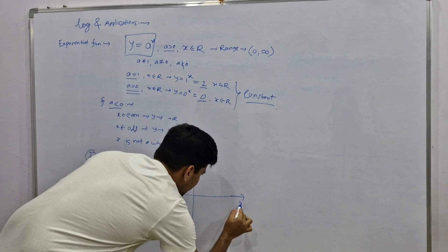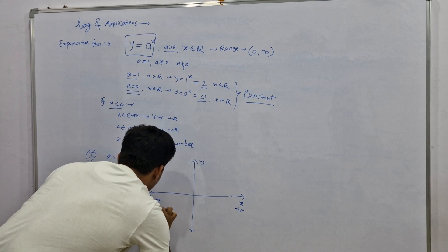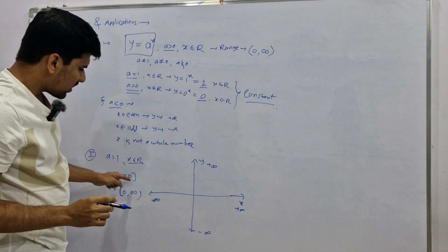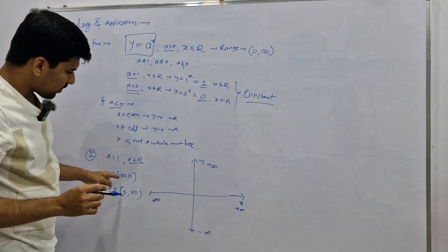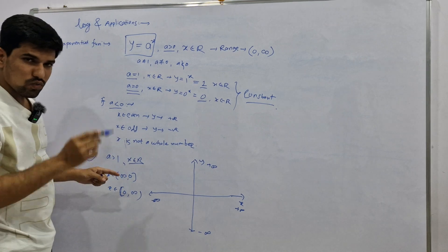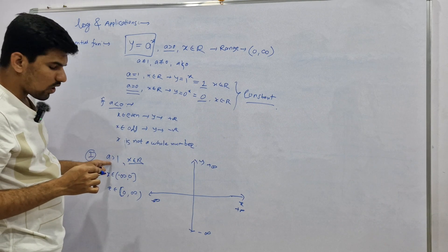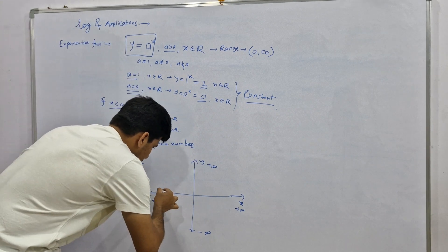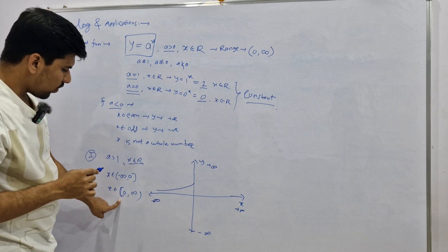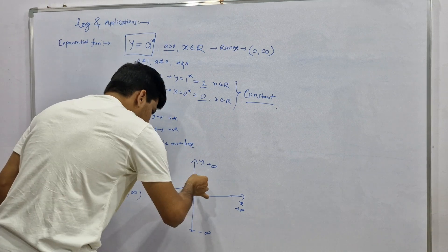To draw this graph: this is the x-axis, this is the y-axis, with positive infinity and negative infinity marked on each. When x belongs to minus infinity to zero and x is minus infinity, our function gives zero, because one upon a to the power infinity equals one upon infinity equals zero. When x is zero, the value of our function will be one. So for negative infinity to zero it rises from near zero up to one. When x belongs to positive infinity, a to the power infinity will be infinity, so our function moves upward.